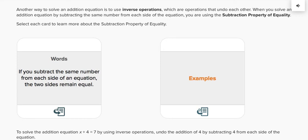Let's have an example. If 5 is equal to 5, then 5 minus 2 is equal to 5 minus 2. If x plus 2 is equal to 3, then x plus 2 minus 2 is equal to 3 minus 2.